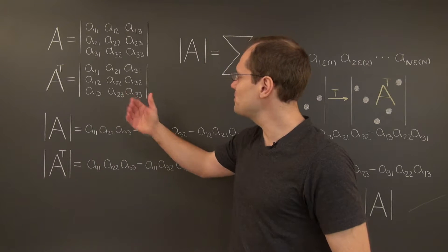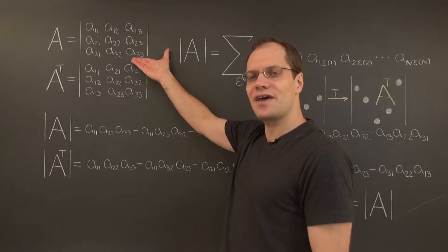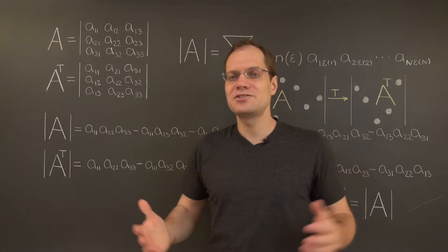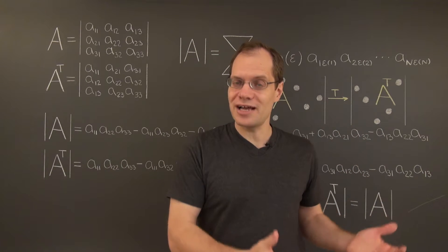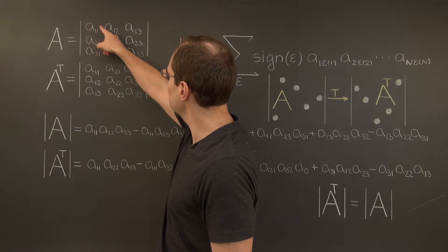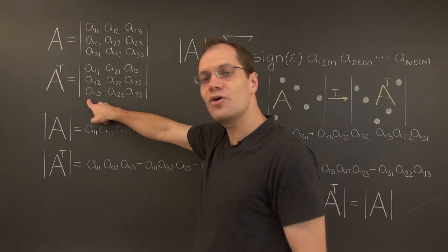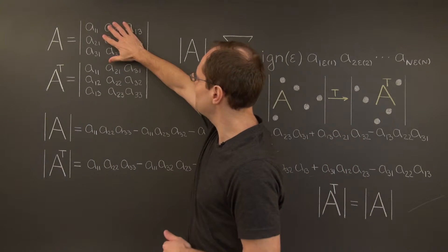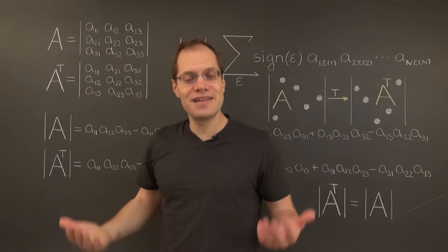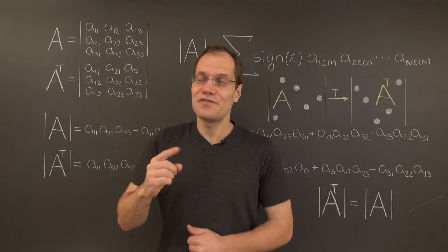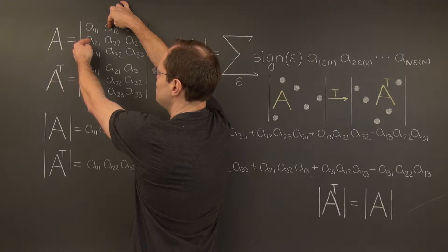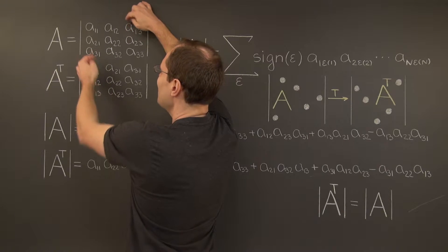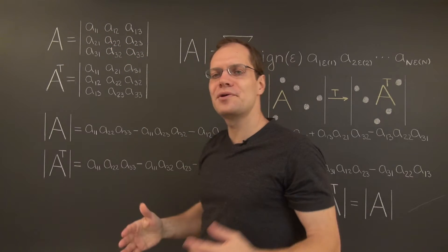We will start with 3x3 matrices. If these are the values of A, then below are the values of A transpose. There are several different ways to describe the relationship between A and A transpose. You could say that the rows of A become the columns of A transpose, or that the matrix flips its values with respect to the main diagonal — it's like a reflection with respect to the main diagonal. For example, these pairs of values will trade their places, and the values on the diagonal will remain where they are.